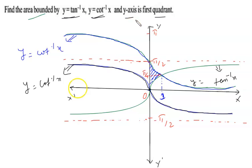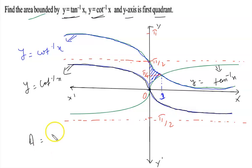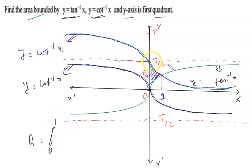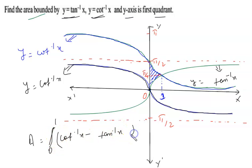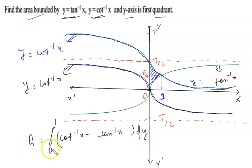Now we have to find out the area of the given region. The limit is 0 to 1 in terms of x. We denote this region because the upper curve — the blue line — is cot⁻¹x. So we write the integrand as cot⁻¹x minus tan⁻¹x, and after subtracting we get this region. We multiply by dy, and we need to convert this expression into terms of y, since we are integrating with respect to y.